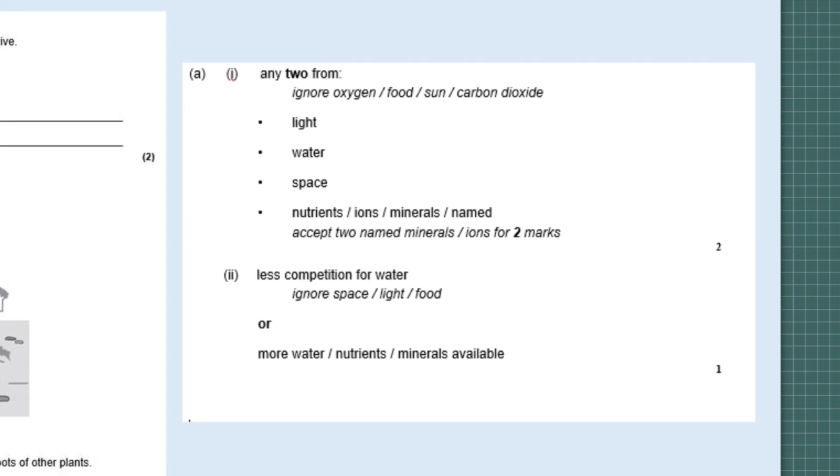The first question about plant competition: they compete for light, water, space and nutrients. You only need two of those for two marks. Notice it says ignore oxygen because they're not competing for oxygen because they're photosynthesizing. They're not competing for food or sun or carbon dioxide because those levels remain, the carbon dioxide levels remain stable. The reason they're not competing for food is they're making their own food, and the sun, well they're not competing for the sun, they're competing for the light that is released by the sun. The second question: why do roots produce poisons? It reduces competition for water, or it means that more water and nutrients or minerals are available to the plant.